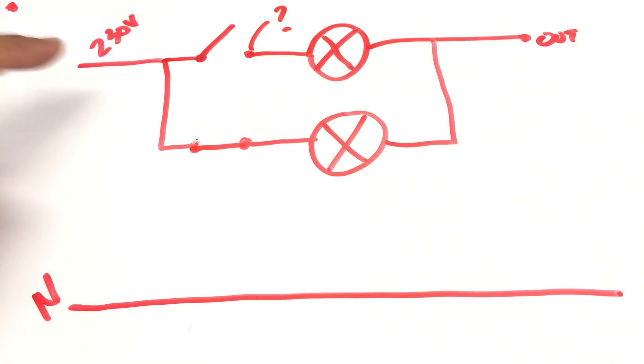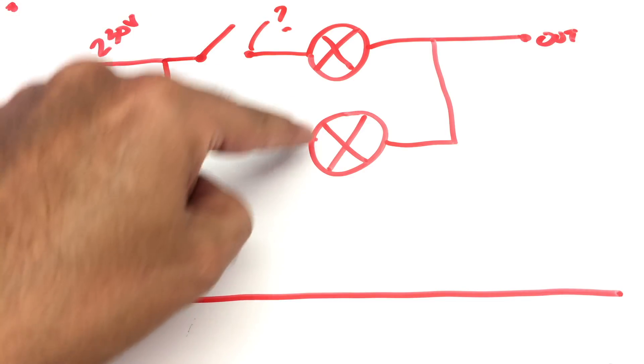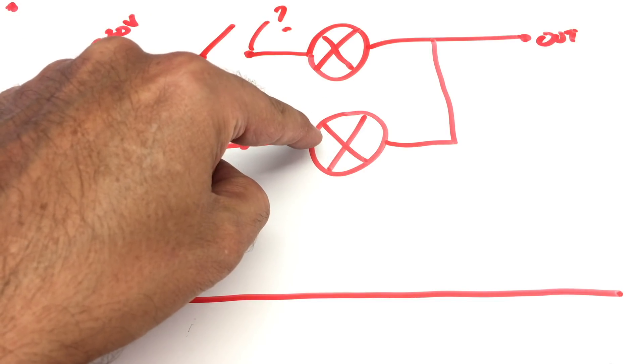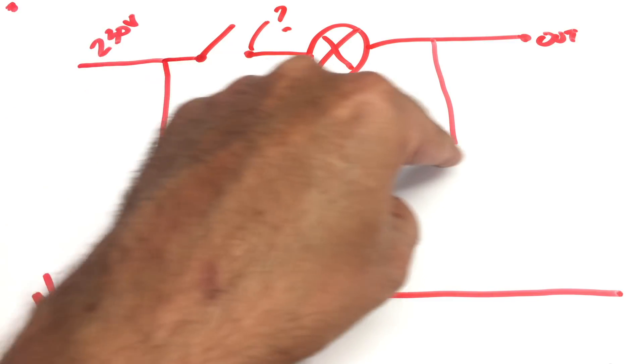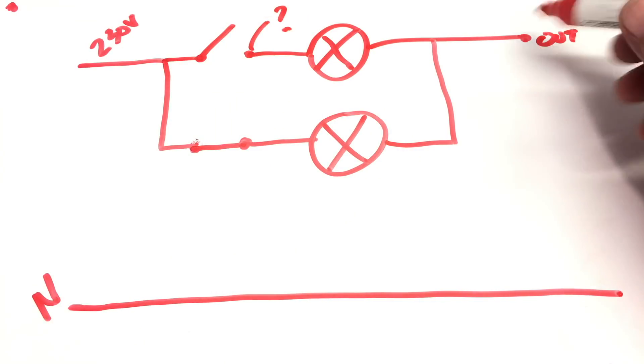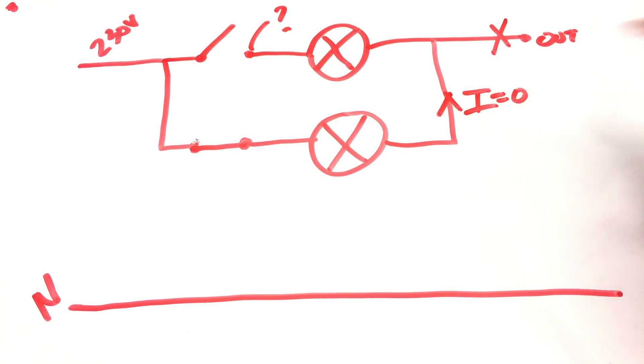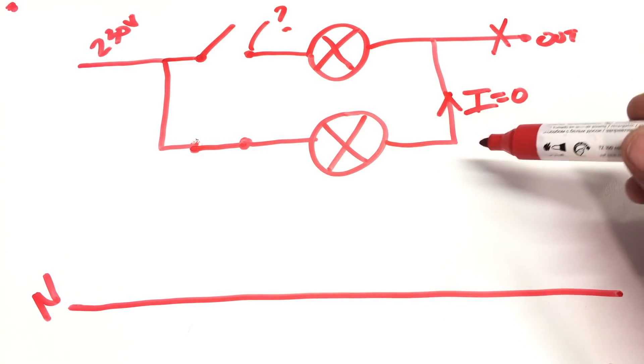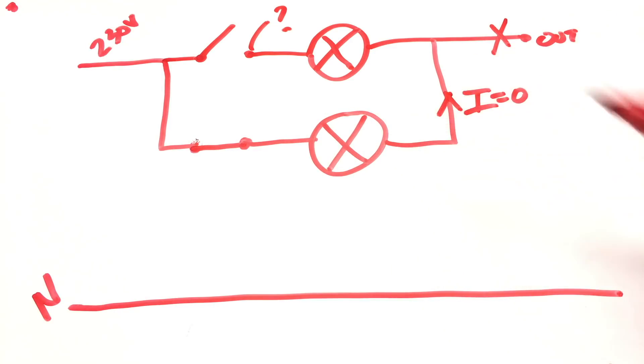What I have here is my mains coming in. 230 goes through there through the switch, applies 230 to that lamp over there. The other side of the lamp goes through there, in there, and output to the output. Now, if this is disconnected, if there's no load on here, there's no current flowing through there. So I equals zero. If I equals zero, then the voltage drop across this light bulb, which is a resistive load really, is zero. So I should have here 230.